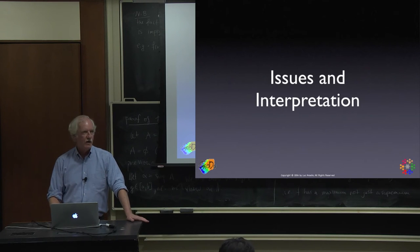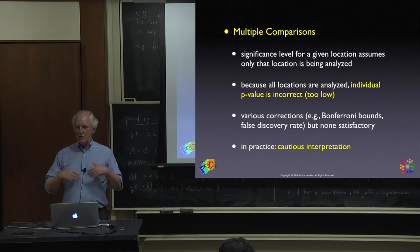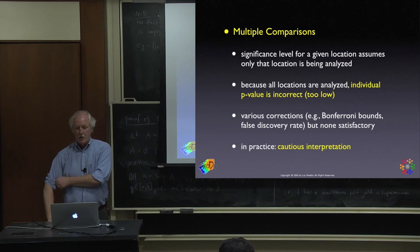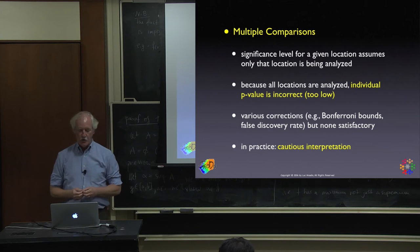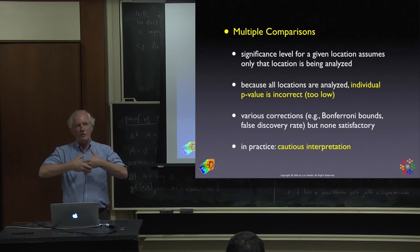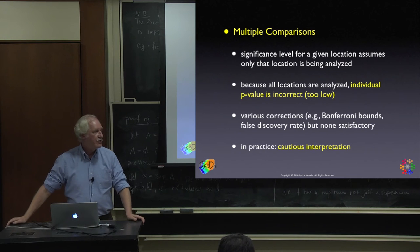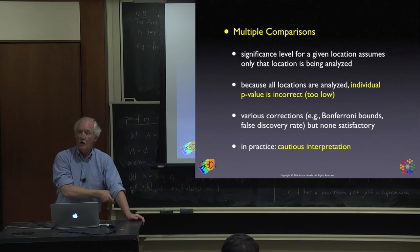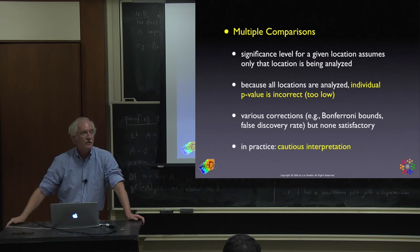Three main issues. First, multiple comparisons: the significance level, whether from analytical methods or conditional permutation at any given location, assumes that's all you're looking at. But you're looking at every location, so the tests are correlated — they use overlapping parts of the data because neighbors keep overlapping. Strictly speaking, individual p-values are incorrect and will tend to be overly optimistic; you might get 0.01 when it's really much higher.